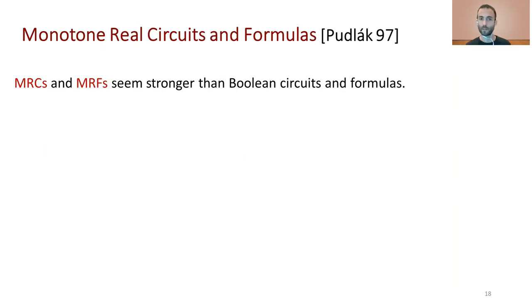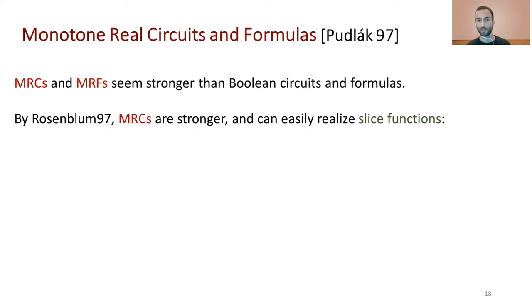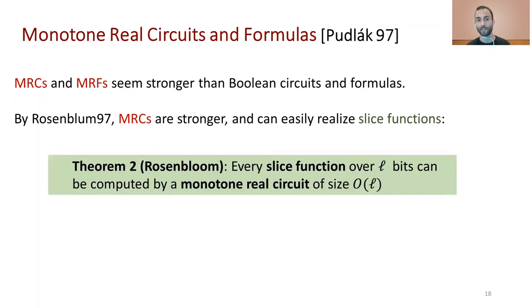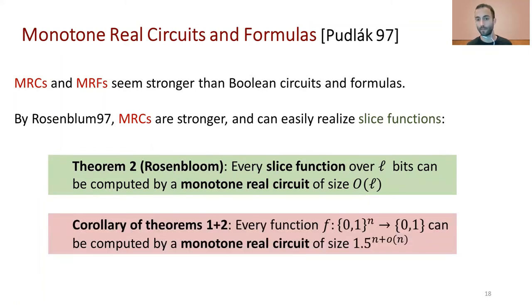Similarly to formulas over slices having more powerful gates than standard circuits, monotone real circuits are also more powerful. Rosenblum showed that monotone real circuits can easily realize slice functions. Since there are doubly-exponentially many slice functions, monotone real circuits are strictly more powerful than standard circuits. Specifically, every slice function over l bits can be computed by a monotone real circuit of size O(l). Combining this with the connection between secret sharing and slice functions, we get as a corollary that every function can be computed by a monotone real circuit of size (1.5)^n — the first non-trivial upper bound below 2^n for this model.